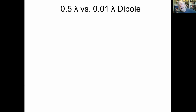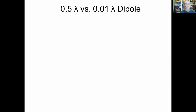Let's talk about short dipoles — specifically a half-wavelength dipole versus a 1/100th wavelength dipole. The first question is: how much more gain do you think the half-wavelength dipole will have compared to the 1/100th wavelength dipole? For this analysis, I'm going to assume it's completely lossless — made out of some kind of superconductor so there's no loss at all.